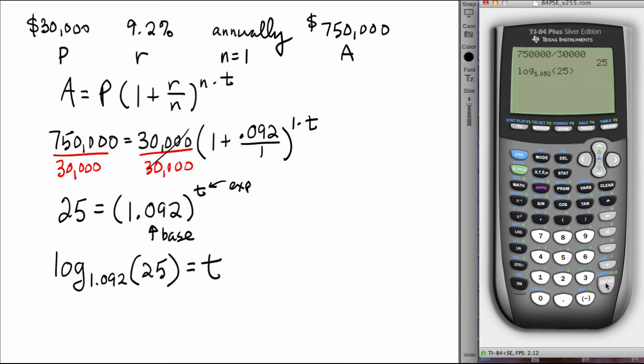The number of years that this money has been in the account is thirty six point five seven, rounded to the hundredth, years.